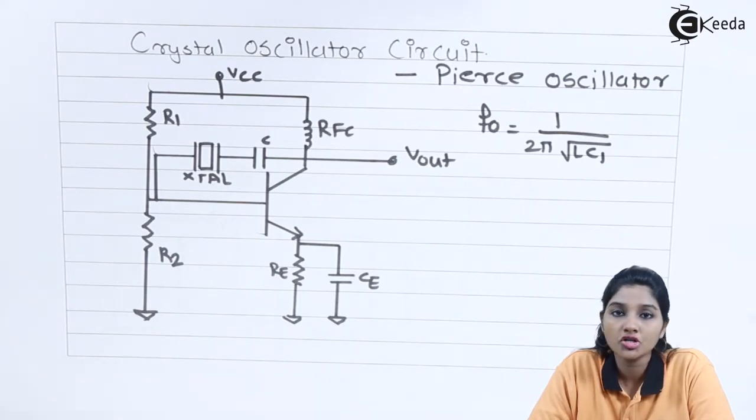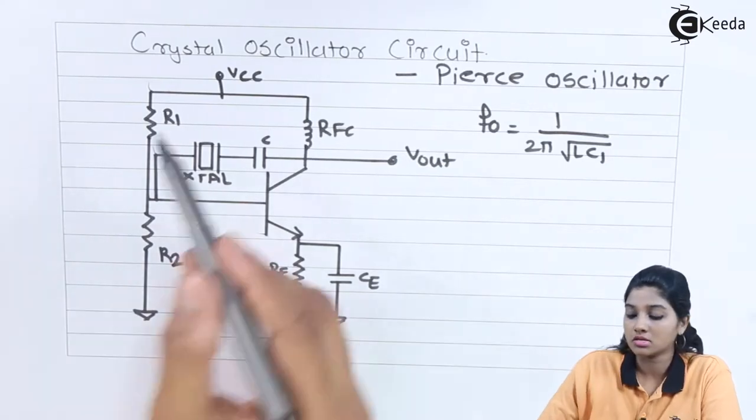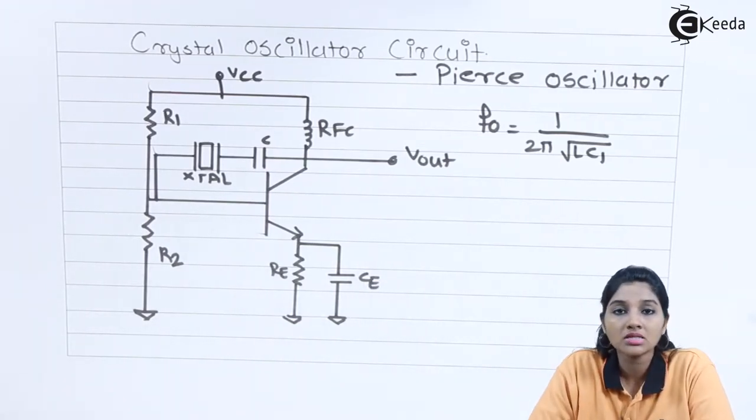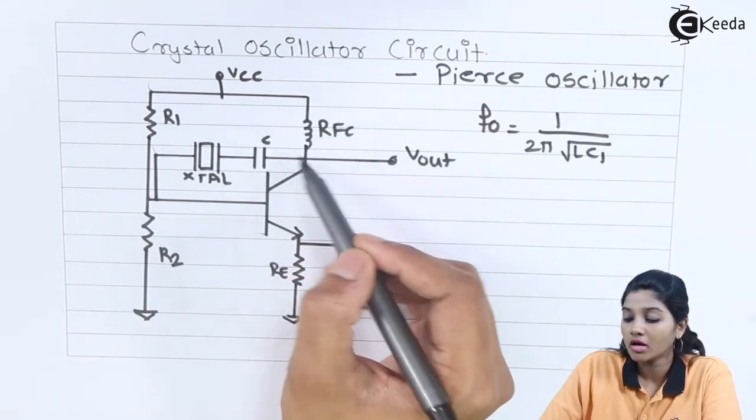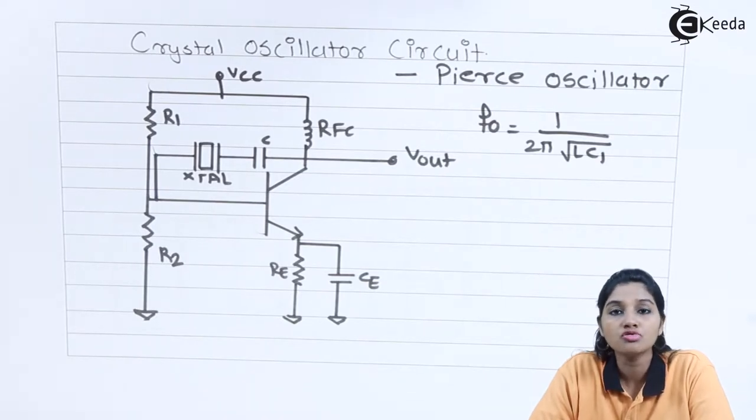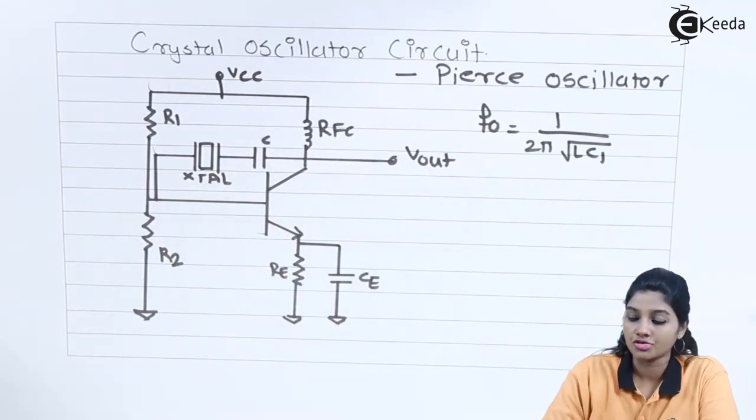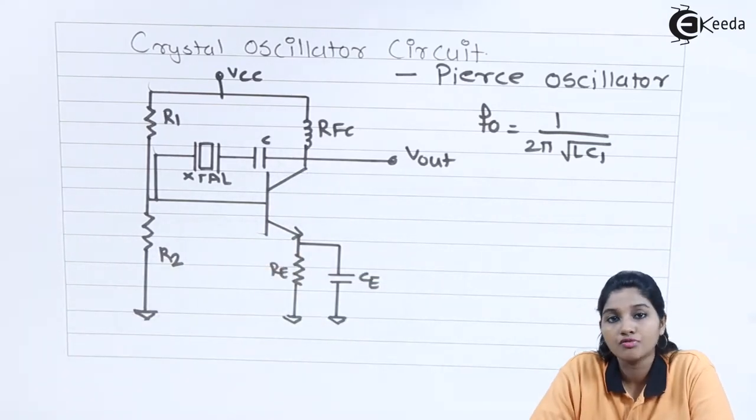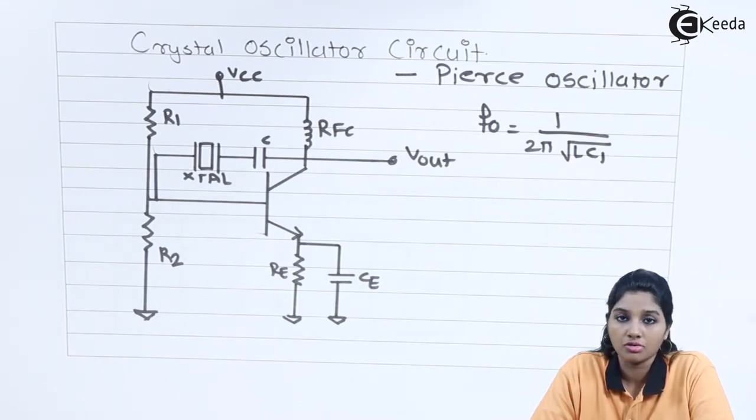In order to use transistor as an amplifier, it is very much important to provide biasing and that biasing is provided by using a voltage divider bias network formed by resistor R1 and R2. The capacitor C is basically used to pass any AC signal and blocks DC signal. There is one coil called as RFC, that's nothing but the radio frequency choke, which is basically used to provide DC signal to reach to the collector and it is connected between VCC and collector of the transistor. The capacitor C is used as a blocking capacitor which blocks DC component and allows only AC component to pass through the circuit.